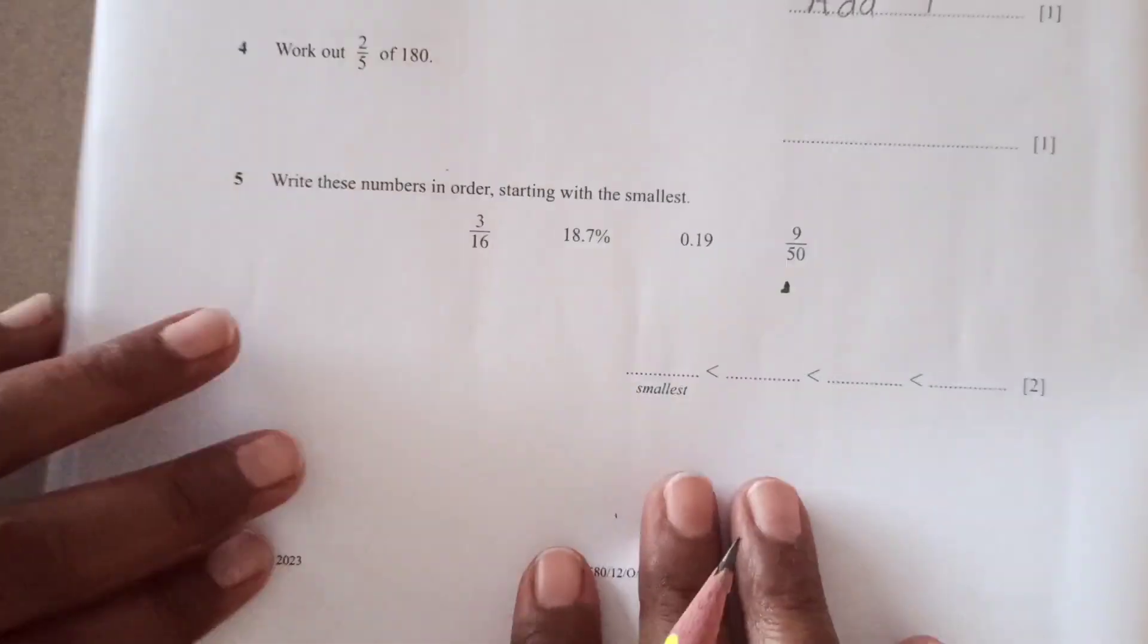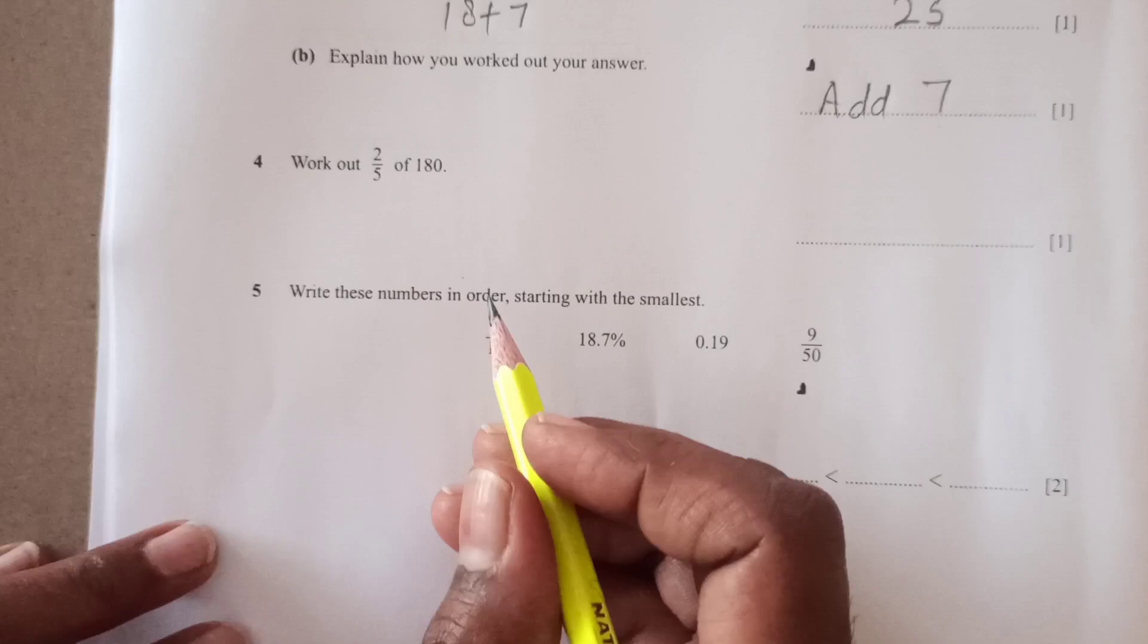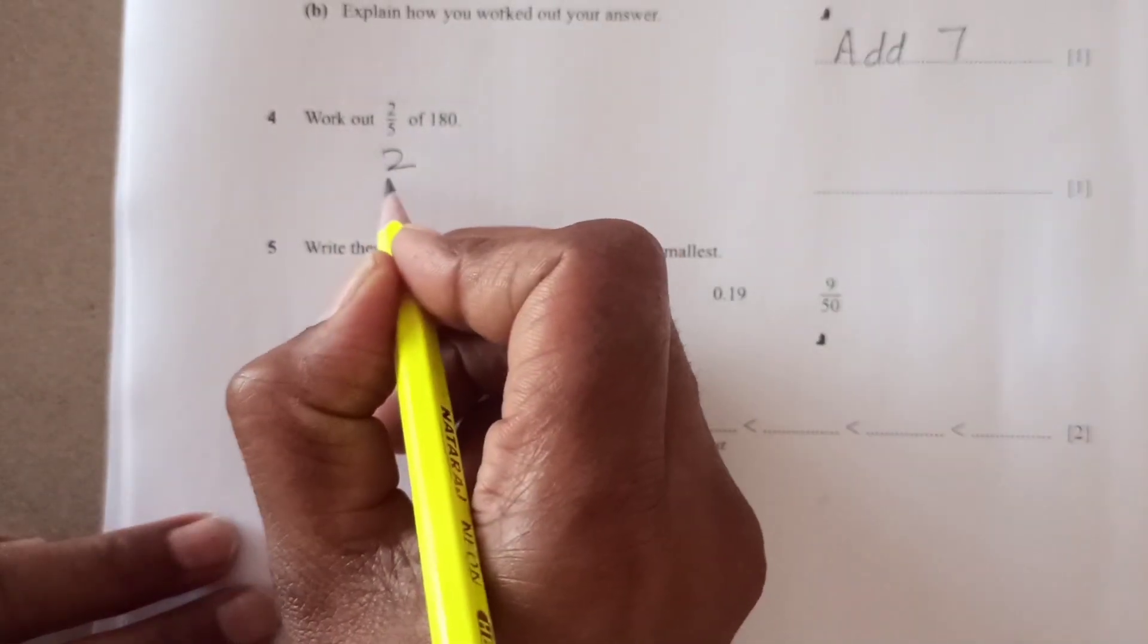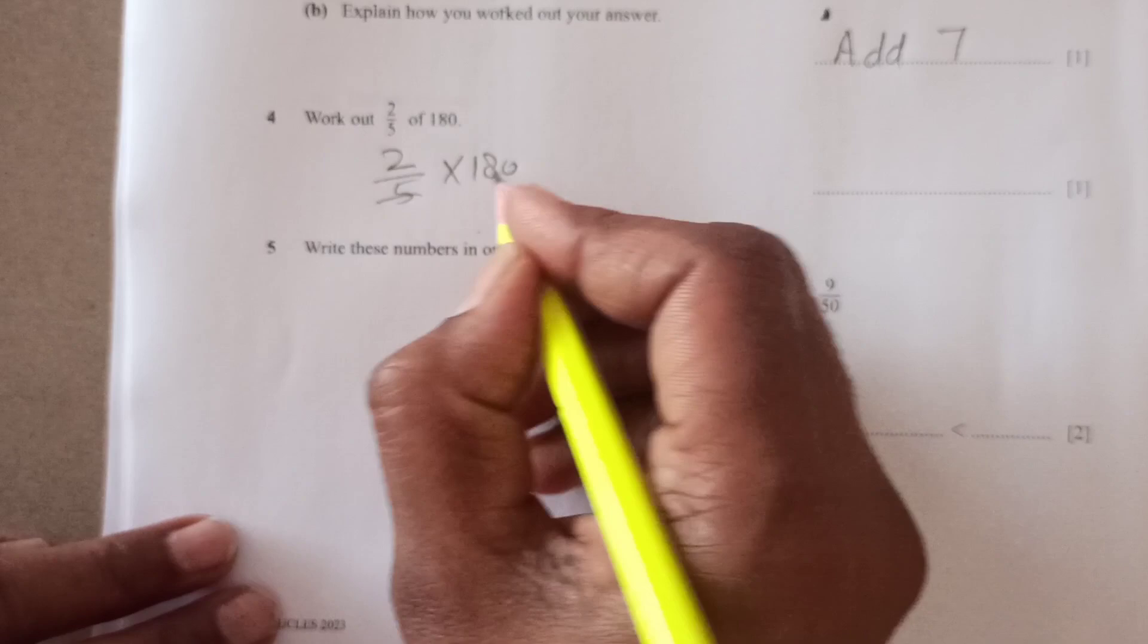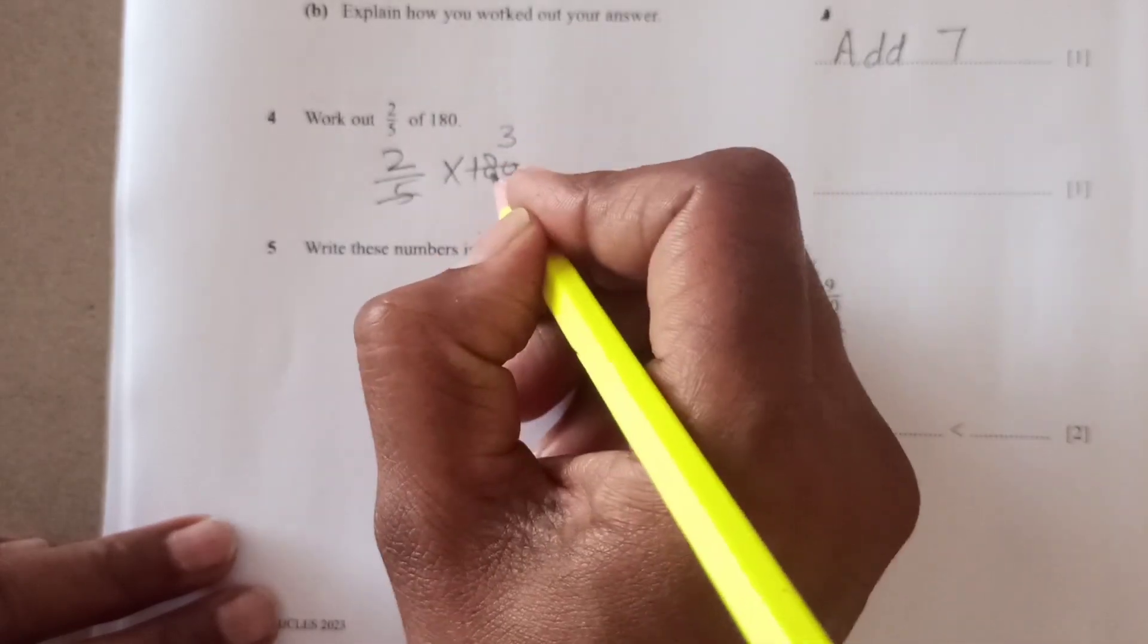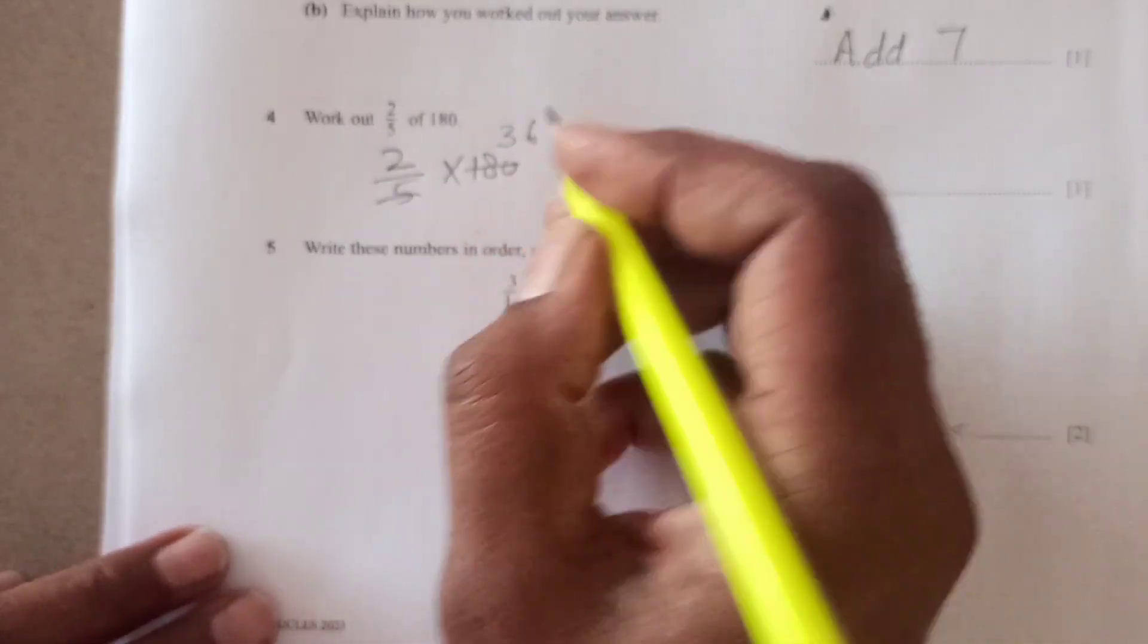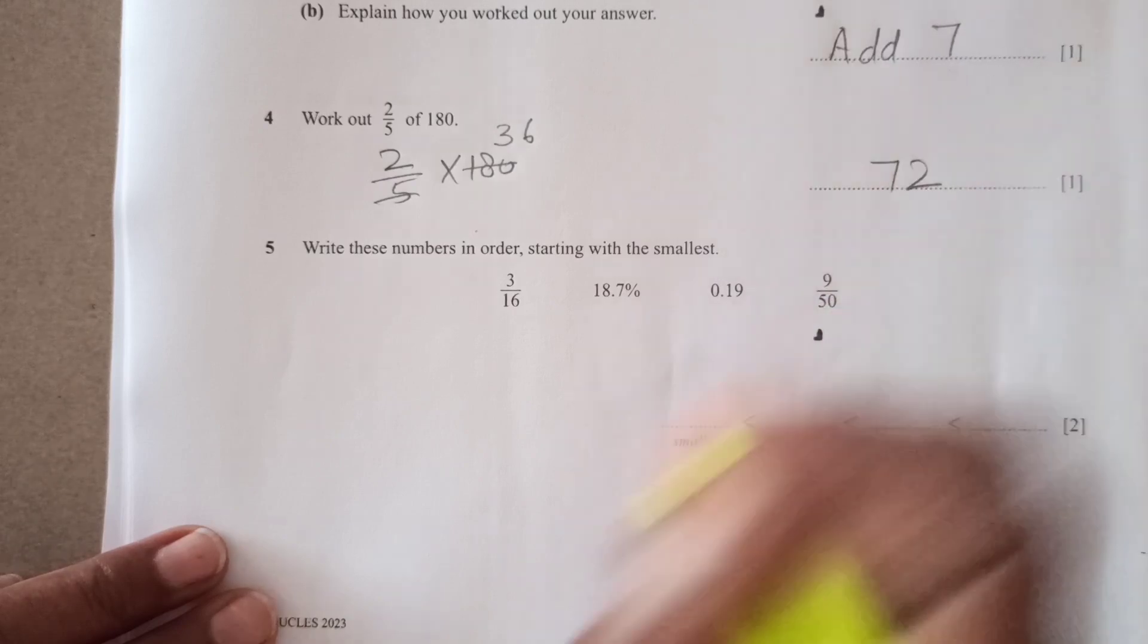Work out 2 over 5 of 180. So 2 over 5 times 180. So 5 times 3, 15, 6. So 36 times 2, it is 72.